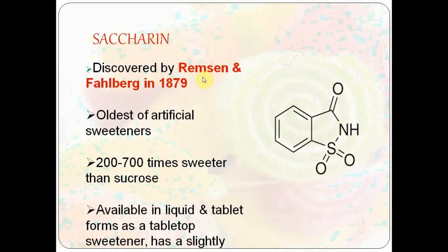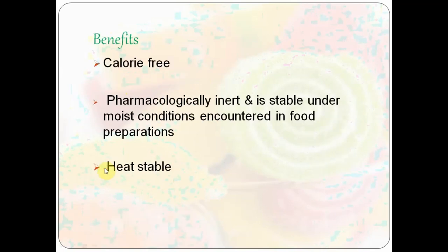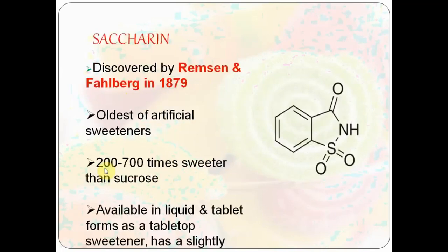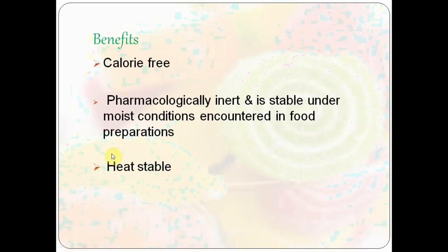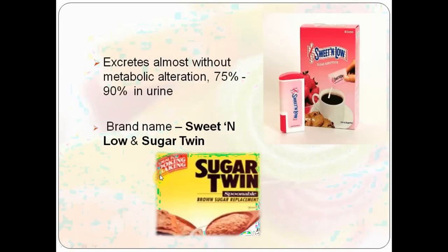The first artificial sweetener is saccharin, discovered by Remsen and Fahlberg in 1879, making it the oldest. It is 200 to 700 times sweeter than sucrose, available in liquid and tablet forms. It is calorie free, pharmacologically inert, stable under moist conditions, and heat stable.